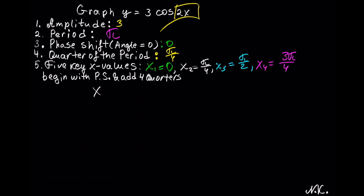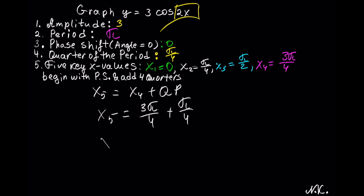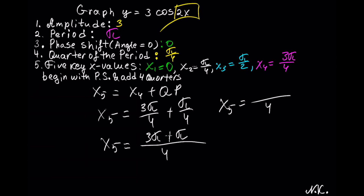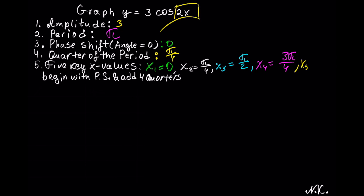x₅ is calculated by taking x₄ and adding a quarter of the period to it. So x₅ equals 3π/4 plus π/4. This gives us 3π plus π in the numerator over 4, which is 4π/4. The 4s cancel and we get x₅ equals π. When there is no phase shift, the last point should be equal to the period.